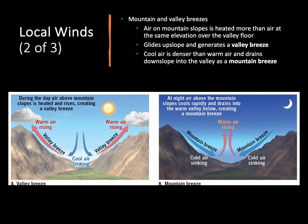Our second type of local wind are mountain and valley breezes, and these again move in different directions depending on whether it's day or night. During the day, the air above our mountains — the solid rock — is going to absorb a lot of heat, get hot, and cause the air above it to warm as well. Warm air rises, creating a valley breeze where air moves from the valley upwards along the slope of the mountain. Because air is leaving the valley, it has to be replaced by cold sinking air moving in.